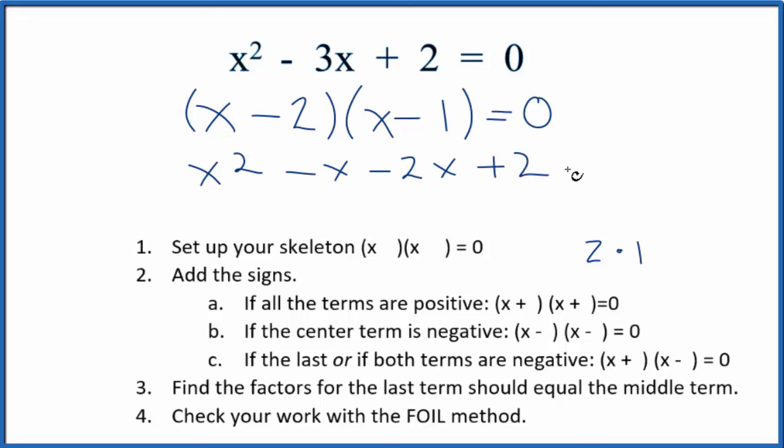We can see in the center here we have -x and -2x. We add those together for -3x, so x² - 3x + 2 = 0. This is correct.